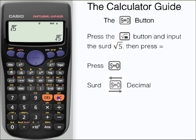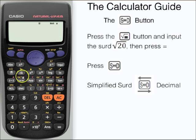Let's just try that again. This time we use the square root button and 20. If we press equals then the calculator automatically gives a simplified surd.